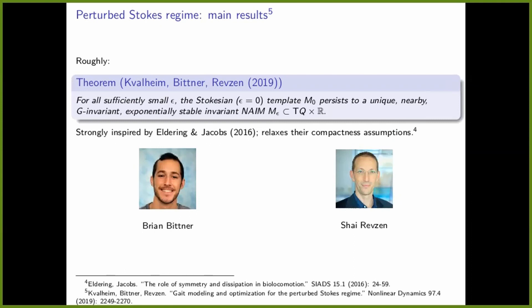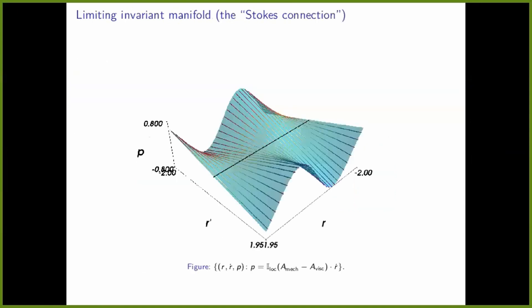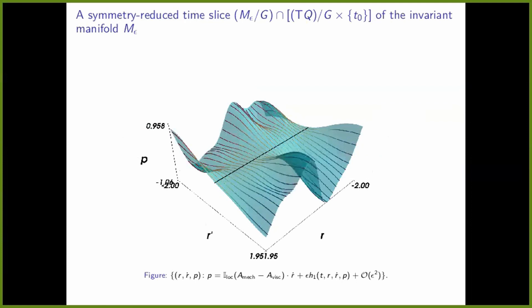This result was strongly inspired by Eldering and Jacobs, who had a similar result in 2016 under stronger compactness assumptions. We needed to lift their compactness assumptions to allow symmetry groups like SE(2), which are non-compact. The rough idea is: there's an invariant manifold the system is confined to when epsilon equals zero. For small but nonzero epsilon, that manifold persists to a nearby one — close but not identical. Unlike the epsilon-equals-zero system, the system is not confined to this manifold; there will be a brief transient where states exponentially converge to this NIM, and then stay there evolving according to a reduced order model.